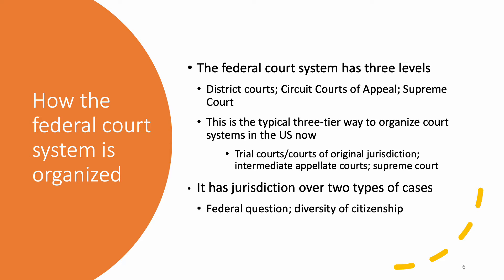Briefly on federal court organization — which I'll cover in much more detail in the second video — the federal court system has three levels. The bottom level is the trial courts, called the district courts, where cases originate. If someone loses in district court, they can appeal to the circuit courts of appeal — the middle-level appellate courts that decide almost all appeals. And at the very top is the U.S. Supreme Court. Most state court systems are organized similarly.